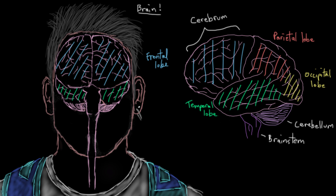All the lobes of the brain have to work together to get their functions done. But having said that, the functions I listed earlier for each lobe represent what that lobe specializes in. So that's some really basic brain anatomy.